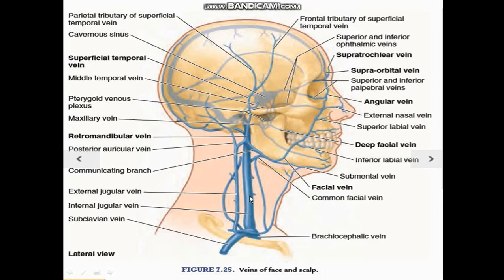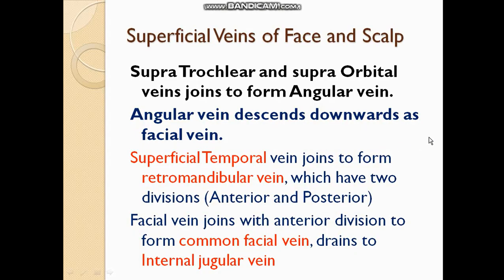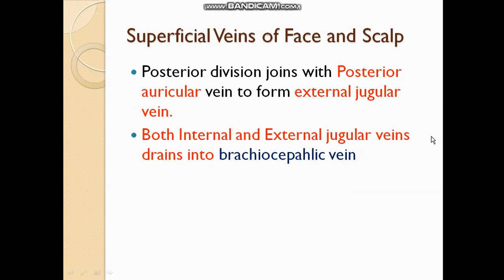These two veins, the internal jugular vein and external jugular vein, drain into the brachiocephalic vein. This is the summary of what we have discussed, and if you have any questions, you can ask.